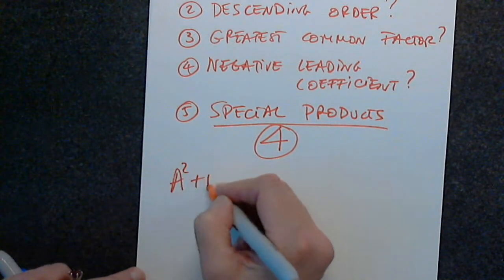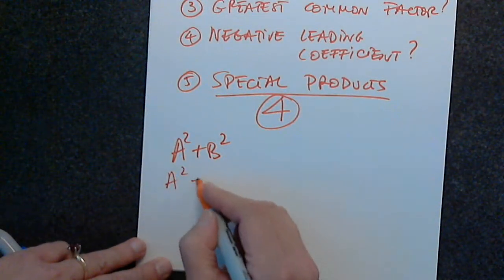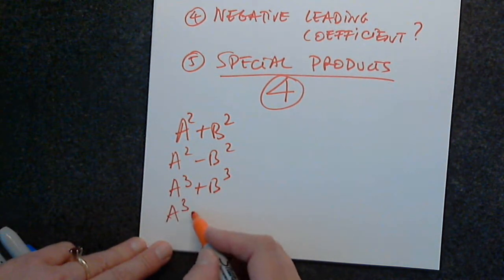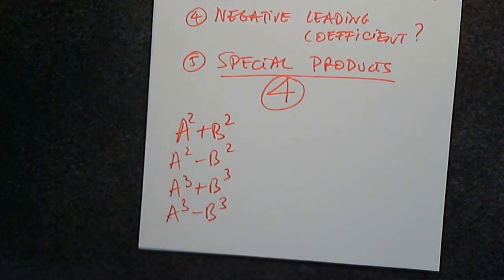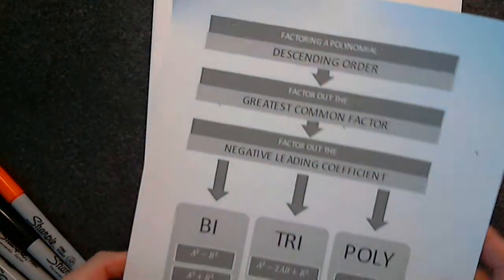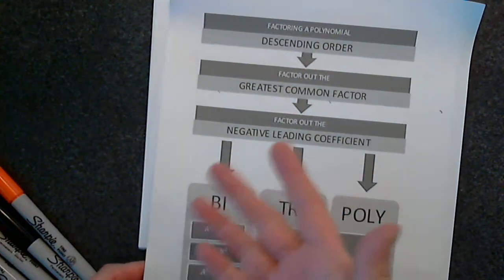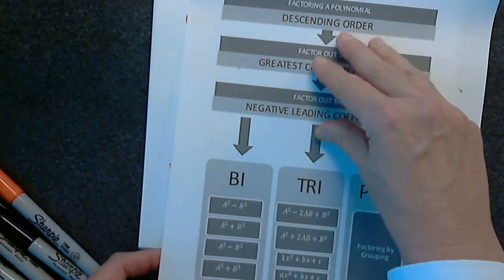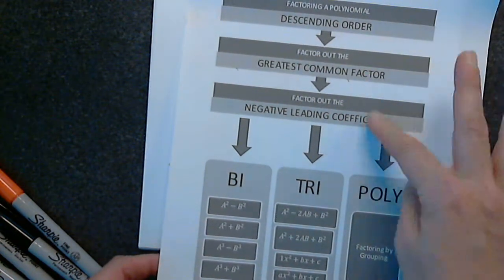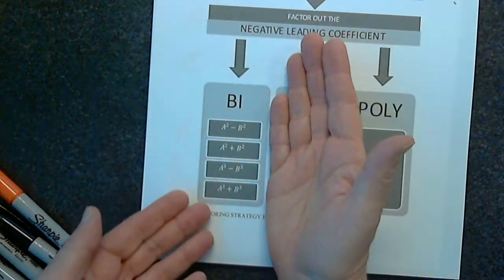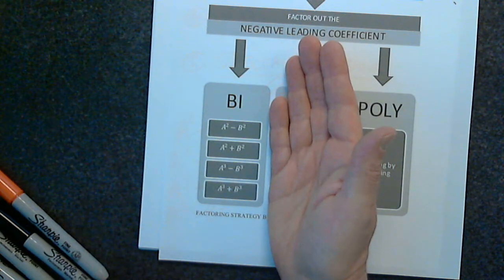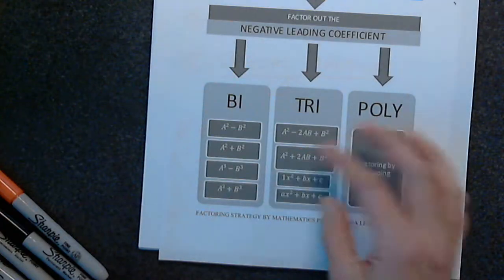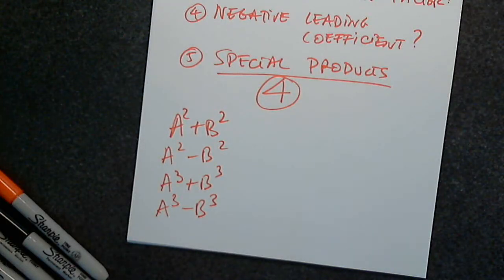Here they are: a squared plus b squared, a squared minus b squared, a cubed plus b cubed, and a cubed minus b cubed. Notice I just went through those steps — what is it? It's a binomial. It's in descending order. Greatest common factor and negative leading coefficient can be lumped into one step. And then, since it's a binomial, these are the options — or it's not factorable. Difference of squares, sum of squares, difference of cubes, sum of cubes.